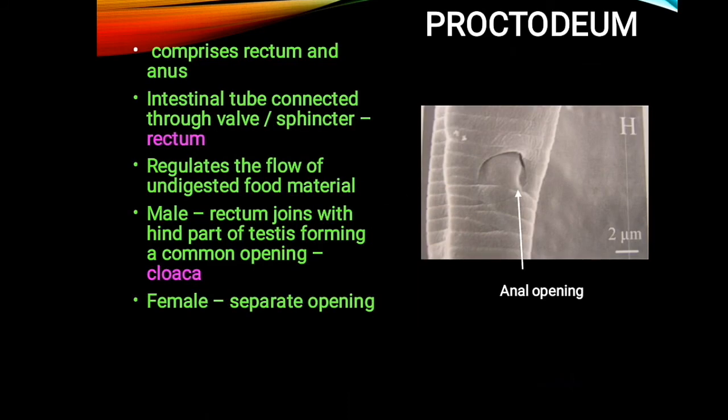Next, about the proctodeum: it is the hind part comprising the rectum and anus. The intestinal tube is connected through a sphincter valve, which regulates the flow of undigested food material. In the case of males, the rectum joins with the hind part of the testis forming a common opening called the cloaca. In females, it has a separate opening.